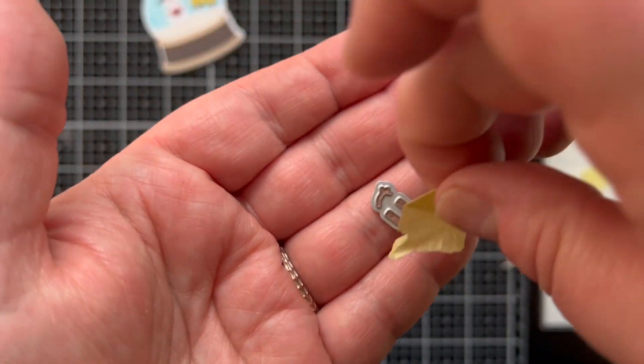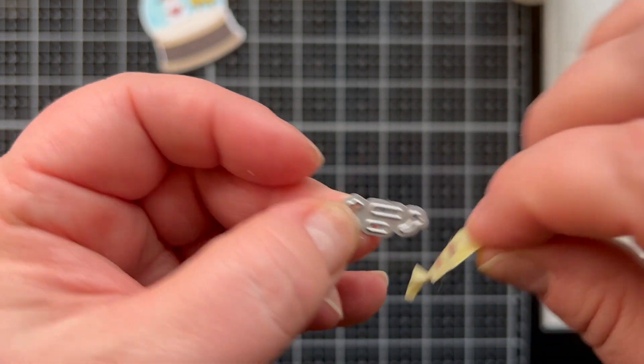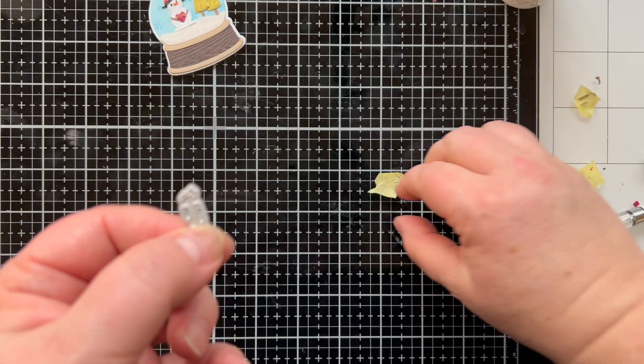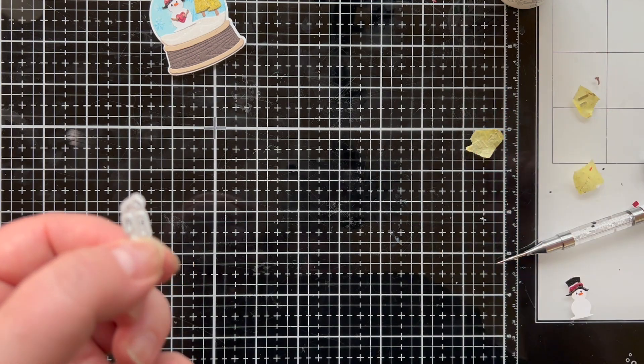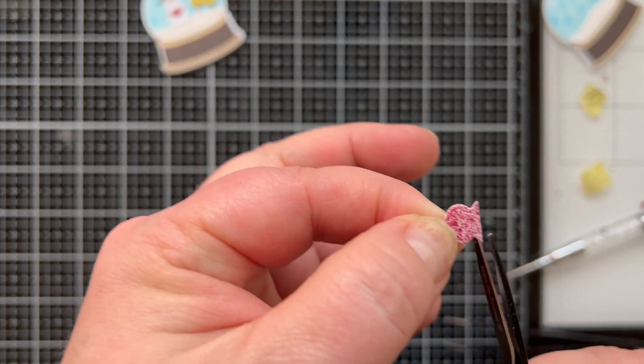Here's a little tip for those tiny little pieces. You can use a piece of tape to remove them from the die and then use your tweezers to peel them off of that tape and stick them down, then you might not lose them.